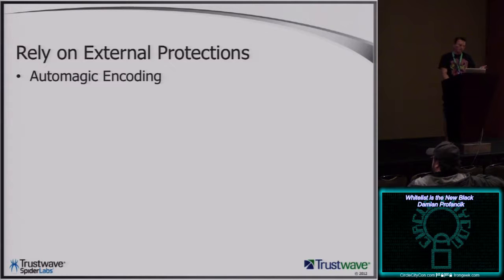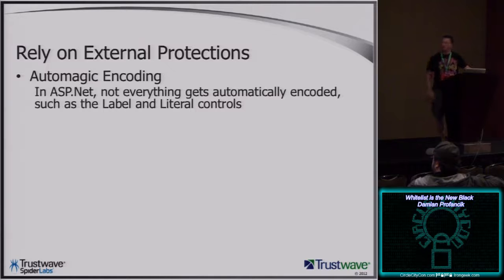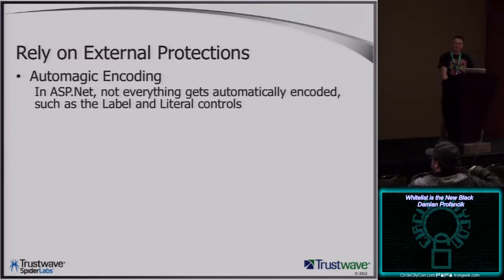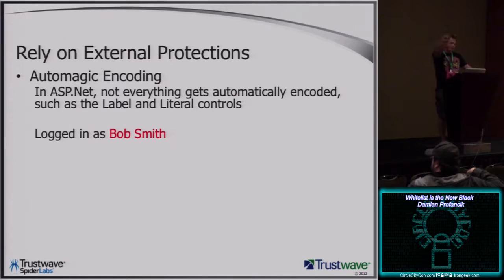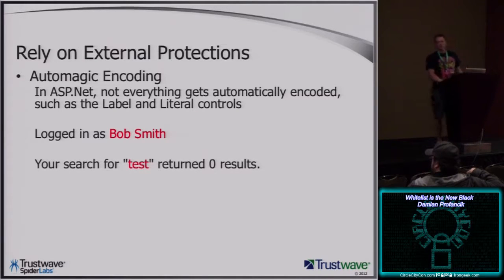ASP.NET is great and does a lot of things for you, but developers get burned when they assume it does everything. There are two controls used heavily — label and literal controls — that do not get automatically encoded. Almost every other control in ASP.NET is automatically encoded. So if you log into an application and see 'logged in as Bob Smith' at the top, and you can control your username in your profile, that's often a vulnerability. I also like to go after search forms — if it repeats back what I searched for, that's often a vector for cross-site scripting.